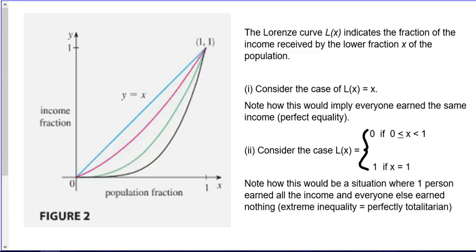Now to calculate the Gini index, we first look at the Lorenz curve. The Lorenz curve indicates the fraction of the income received by the lower fraction x of the population.